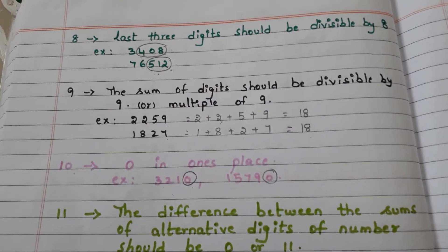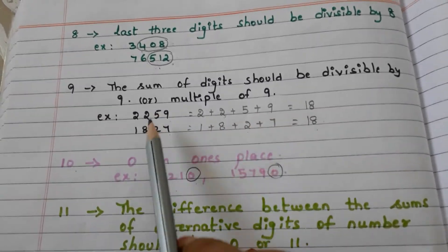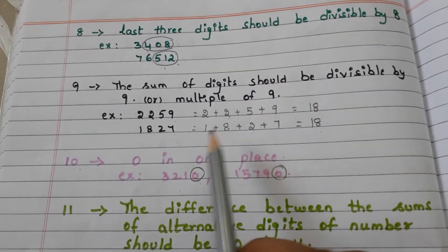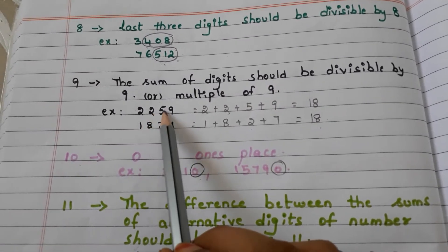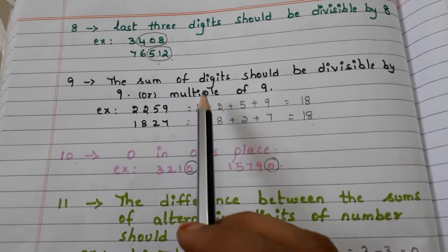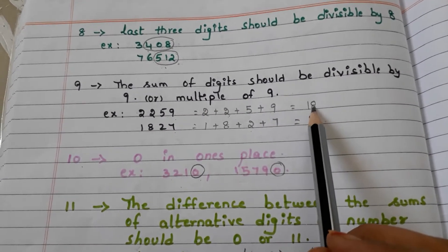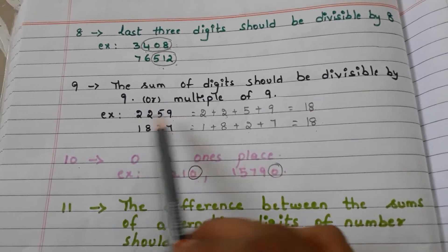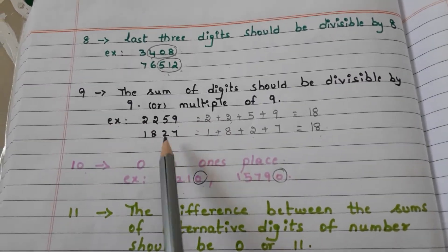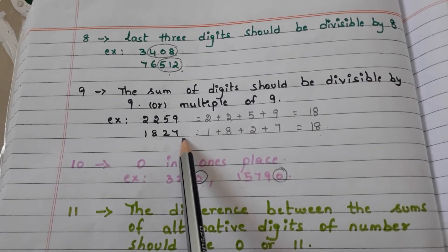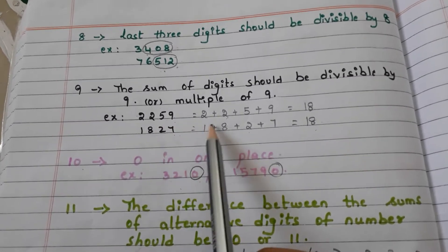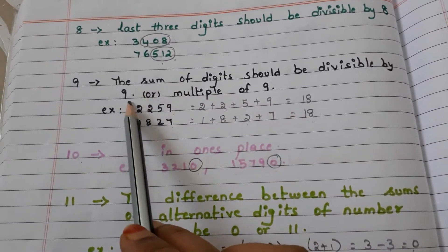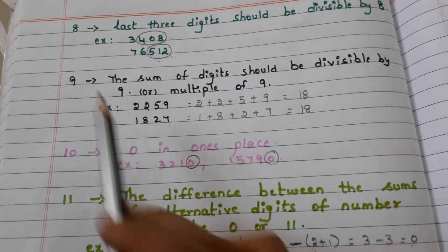Let us go for 9. The divisibility rule for 9 is: the sum of digits should be divisible by 9, or a multiple of 9. For example, take 2259. The sum of digits: 2 plus 2 plus 5 plus 9 is 18. And 18 is a multiple of 9, so the entire number is divisible by 9. Take another number: 1827. The sum of digits: 1 plus 8 plus 2 plus 7 is 18. And 18 is a multiple of 9, so the entire number is divisible by 9.